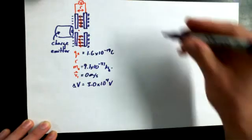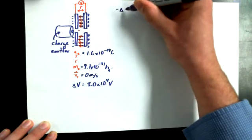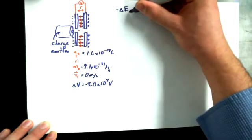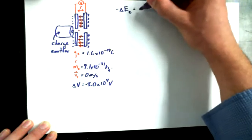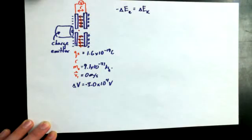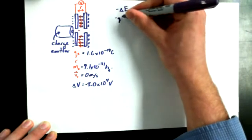And we were able to use conservation of energy, so a negative change, or we said this had to be a negative value. Negative change in electric potential energy equals the change in kinetic energy, and by plugging in our electric potential energy change, negative Q times delta V.